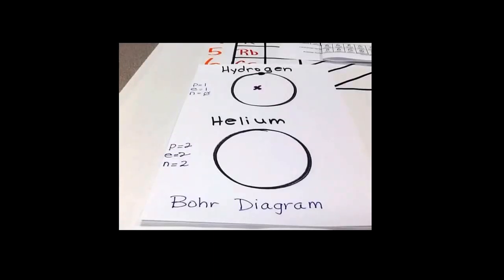So let's look at hydrogen. Hydrogen has one proton, one electron, and no neutrons. So you would draw it as above.